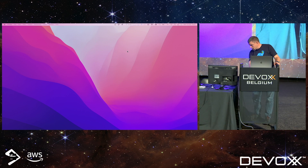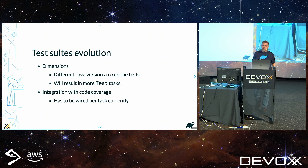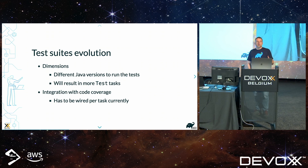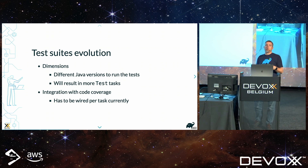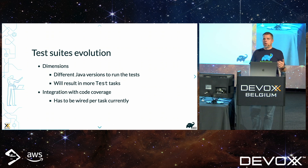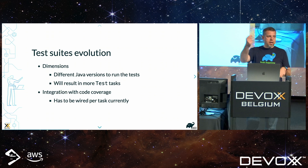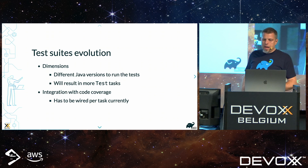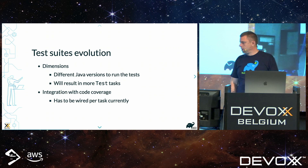Some of the future evolutions for test suites: we also need further work to integrate that better with code coverage. Right now if you apply CheckStyle or Jacoco, by default it will only target your main tests — not these added suites. We need some higher-level DSL to allow you to do that, because otherwise what you have to do is grab the task instances and configure them properly. That gives us a big overview of all of that. Any questions at that level?